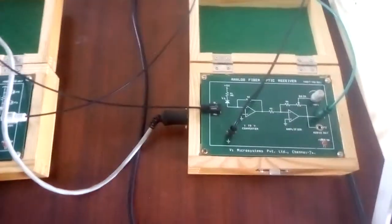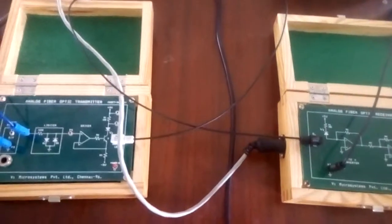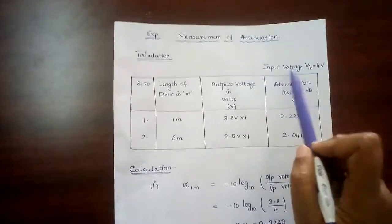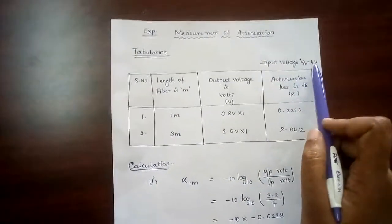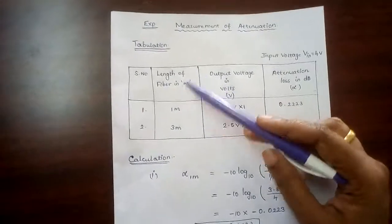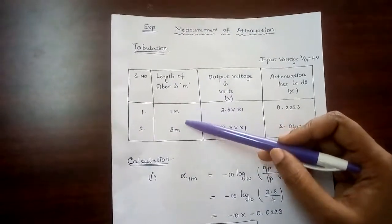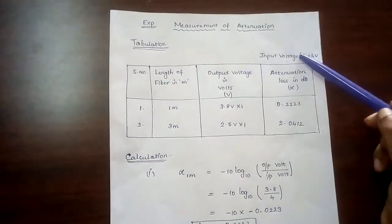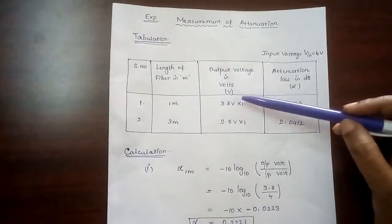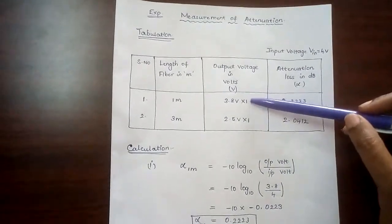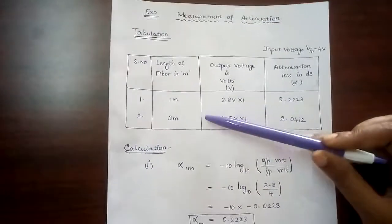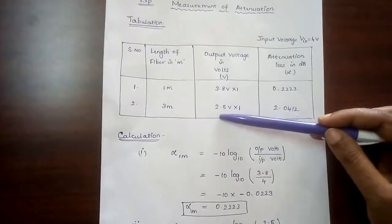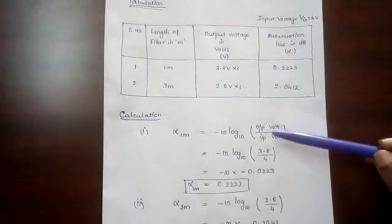Now we will see the calculation part — measurement of attenuation. Input voltage Vin equals 4V. For the tabulation: serial number, length of fiber. We have 2 lengths — 1 meter and 3 meter — with corresponding output voltages. For 1 meter fiber, output voltage is 3.8V. For 3 meter fiber, output voltage is reduced to 2.5V.